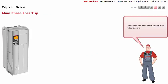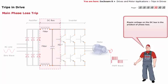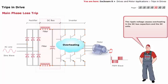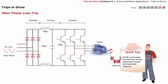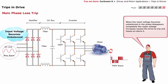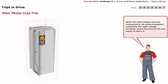Next, let's see how main phase loss trips occur. The drive monitors phase loss by monitoring the amount of ripple voltage on the DC bus. Ripple voltage on the DC bus is the product of phase loss. The ripple voltage causes overheating in the DC bus capacitors and DC coils. If left unchecked, the lifetime of the capacitors would be drastically reduced. Phase loss will only be detected if the load is larger than about 30 to 40 percent of full output load of the drive. When the input voltage becomes unbalanced or the phase disappears completely, the ripple voltage increases, causing the drive to trip and issue alarm 4.